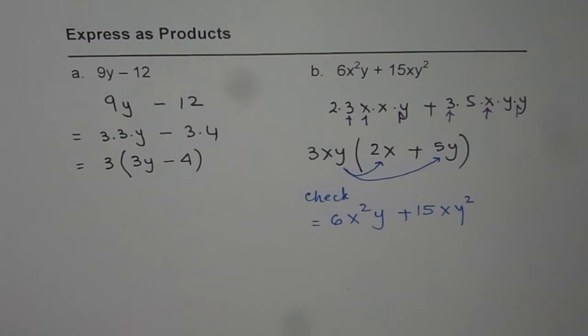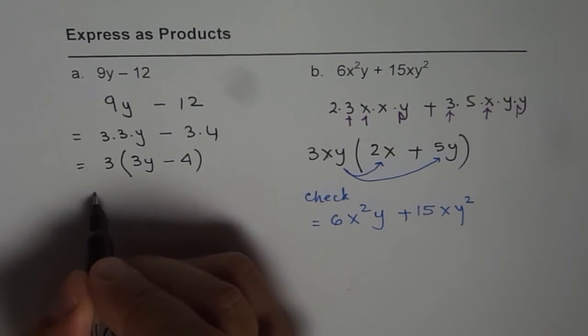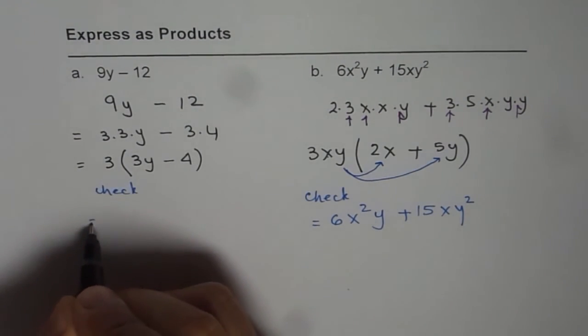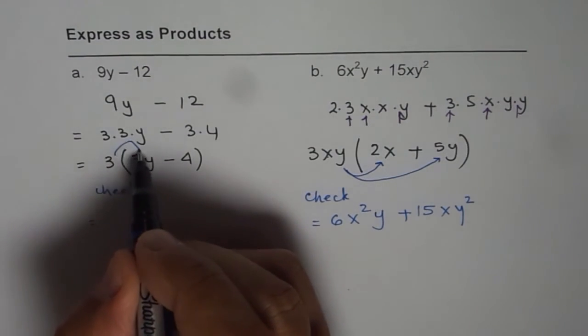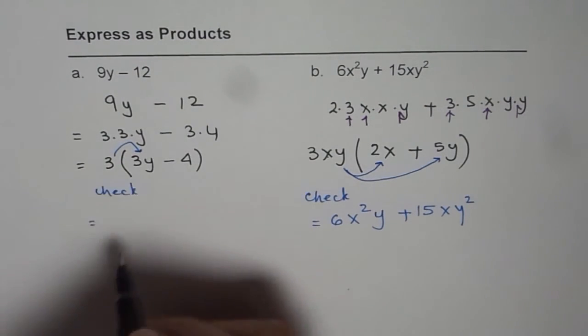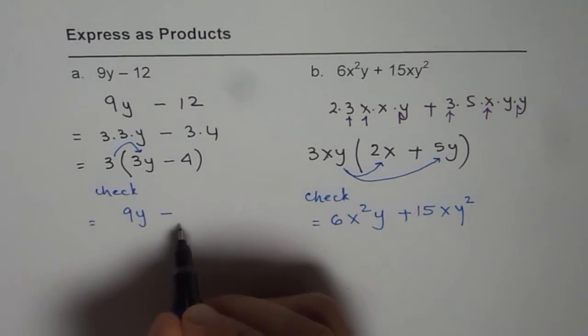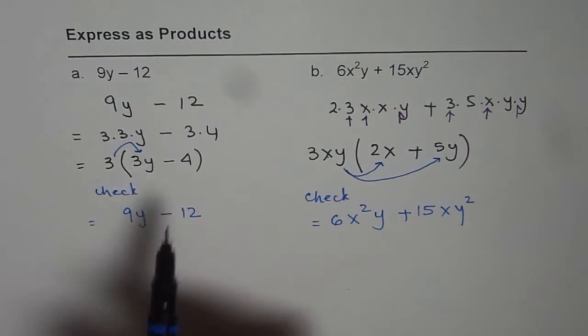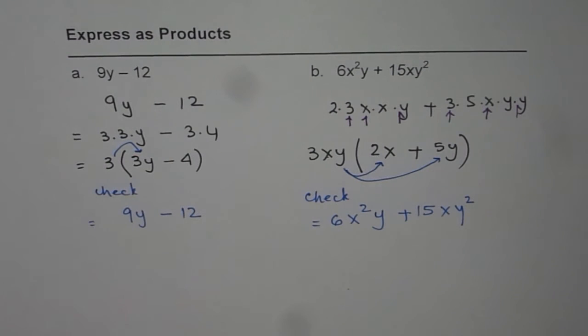Let's check the first one also. When we multiply 3 by 3y, we get 9y. Then 9y minus 3 times 4 is 12, so we get 9y minus 12. That is how you can check your answer. I hope that helps. Thank you.